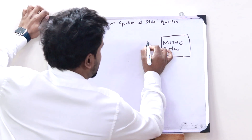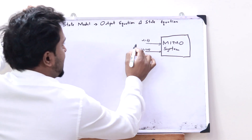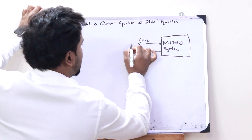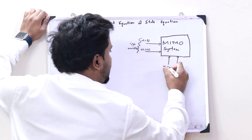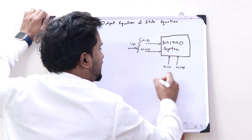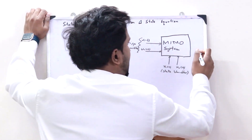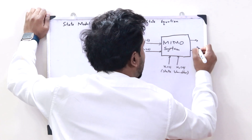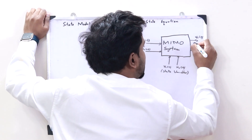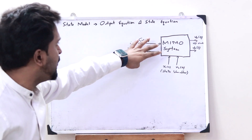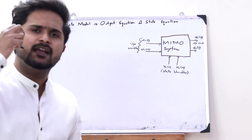The first set of inputs, let us take as U1(t) and U2(t) — let these be represented as input variables. A second set of inputs, X1(t) and X2(t) — let these be the state variables. Therefore, we obtain a set of outputs Y1(t) and Y2(t) — let these be the output variables. Upon analyzing such a multi-input, multi-output system using state-space analysis, we get two equations.